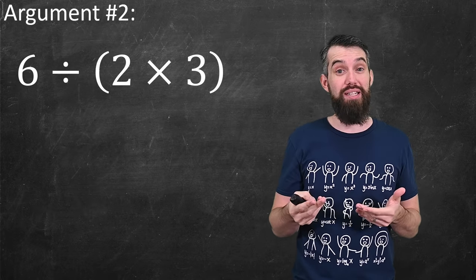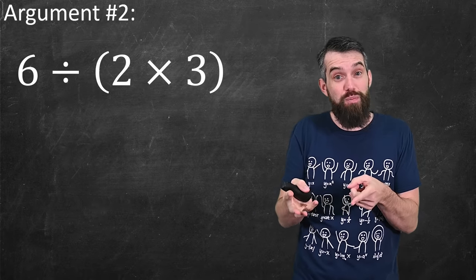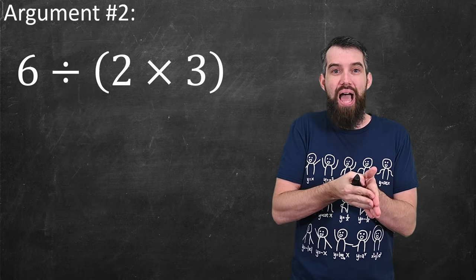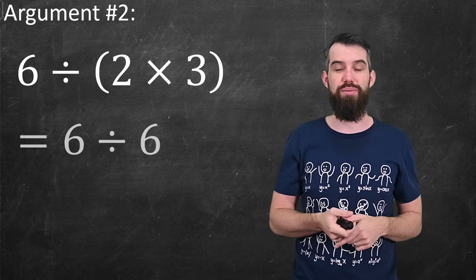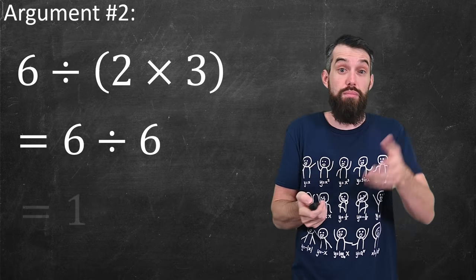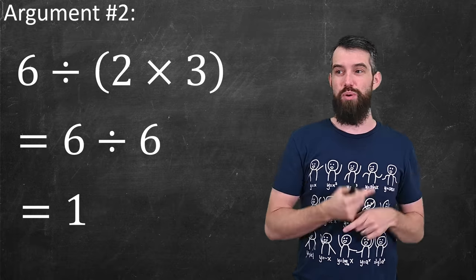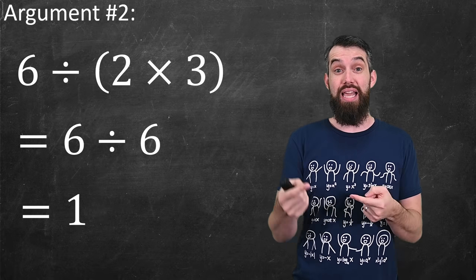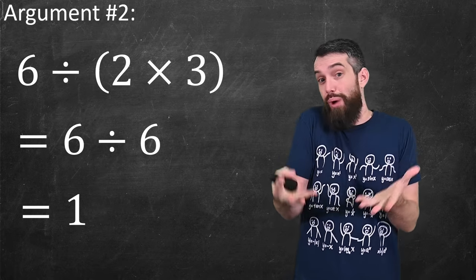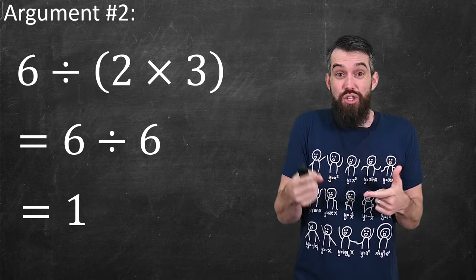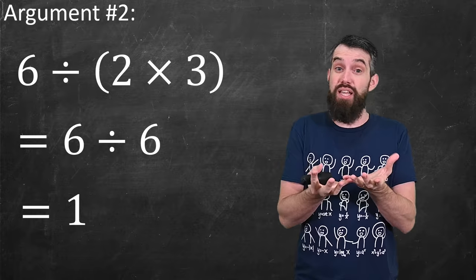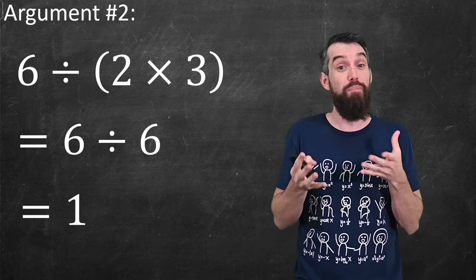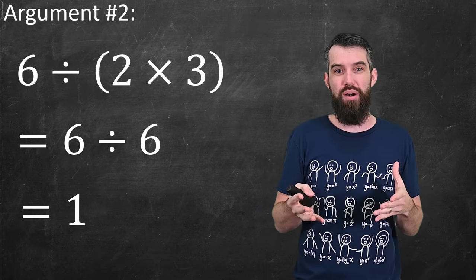The second argument interprets there being an implicit bracket in a different spot. It says you do 6 divided by 2 times 3, where the 2 times 3 is in brackets. So you do 2 times 3, you get 6, it's 6 divided by 6, and you get the final value of 1. Proponents of this argument might say that there was an implicit bracket on this side because you had a 2 right beside a 3, the implication is that those are supposed to be multiplied.